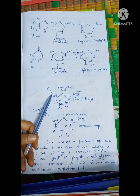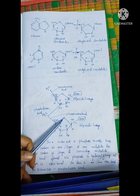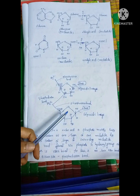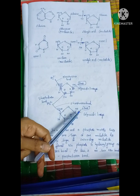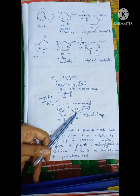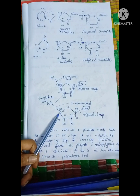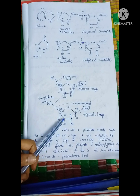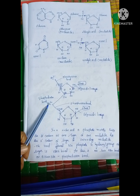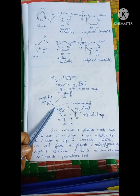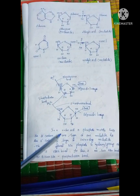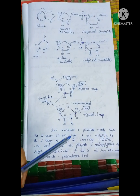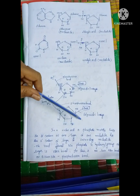The bond between nucleotides is the phosphoester bond. Adjacent nucleotides are connected by a phosphodiester bond — the 3rd carbon of one sugar of one nucleotide is connected to the 5th carbon of the sugar of the succeeding nucleotide via the phosphate group.